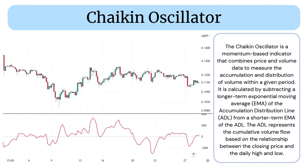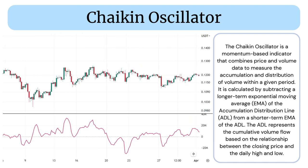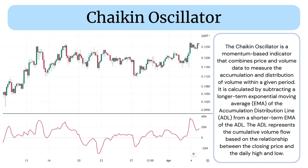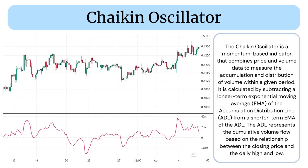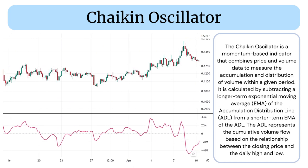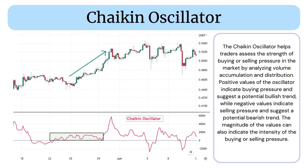The ADL represents the cumulative volume flow based on the relationship between the closing price and the daily high and low. The Chaikin Oscillator helps traders assess the strength of buying or selling pressure in the market by analyzing volume accumulation and distribution.